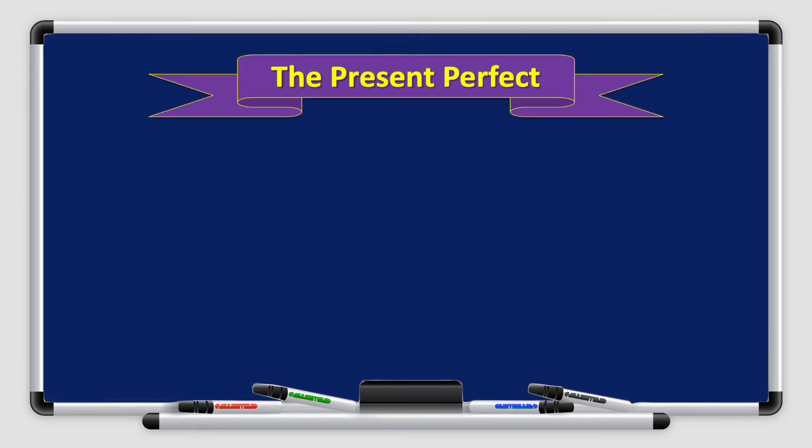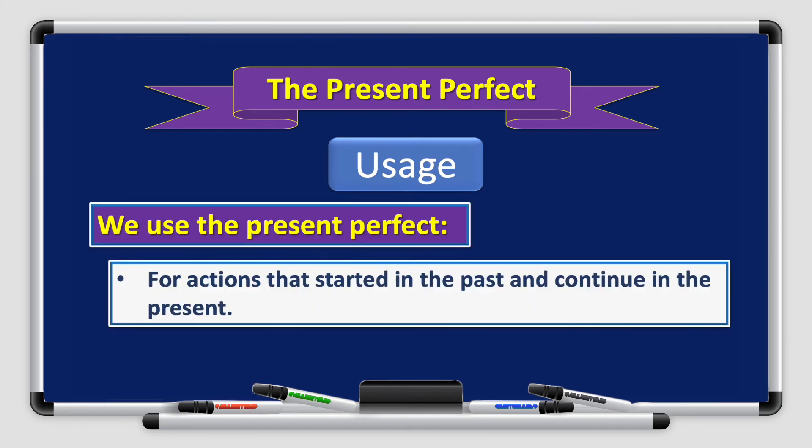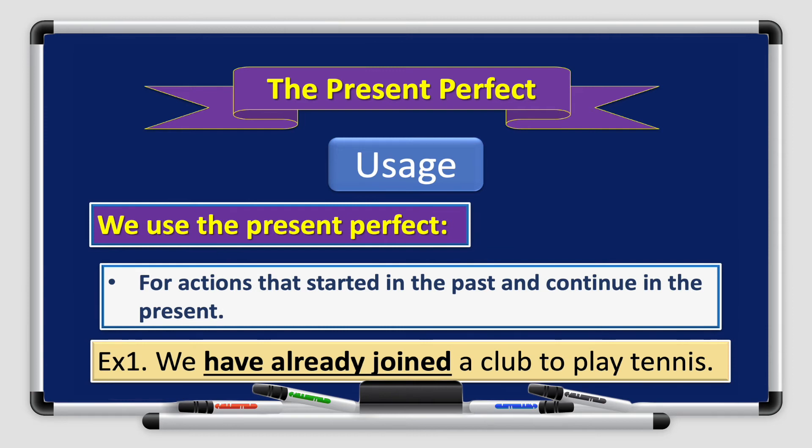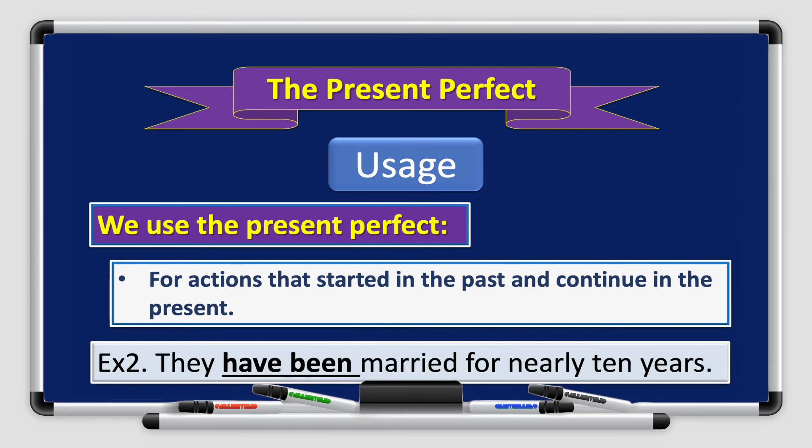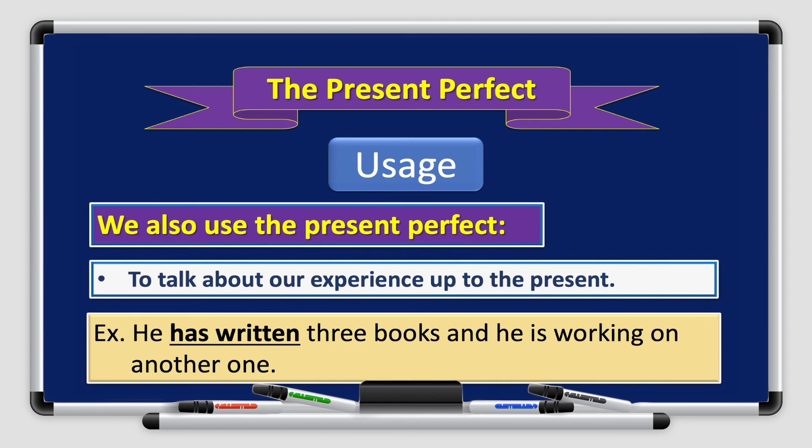Now that we've covered the order of adjectives, it's time to move on to the present perfect. When do we use the present perfect tense? We use the present perfect for actions that started in the past and continue in the present. For example, we have already joined a club to play tennis. It started in the past, but continues to the present. They have been married for nearly ten years. We also use the present perfect to talk about our experience up to the present time. For example, he has written three books and he's working on another one.